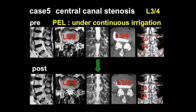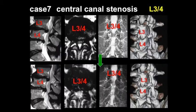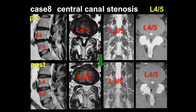Case 5 is central canal stenosis at L3-4, decompressed by percutaneous endoscopic laminotomy with a unilateral approach. Case 6 is central canal stenosis at L4-5, using the same bilateral decompression method with a unilateral approach as the previous case. Case 7 is central canal stenosis at L3-4, in which we again use the same bilateral decompression method with a unilateral approach. Case 8 is central canal stenosis at L4-5, using the same method.